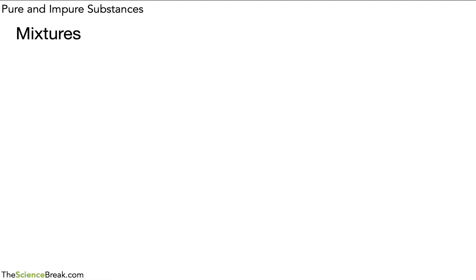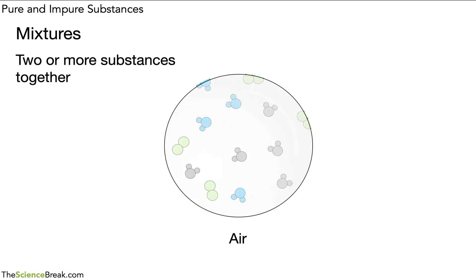What about mixtures or impure substances? Well, these are made of more than one substance, or two or more substances together, and again by substances we mean elements or compounds. One common example of a mixture is air. Now you might say air is a pure substance, however air is actually a mixture of many different gases. So if we could magnify into some air, we would see molecules of different gases: oxygen, water vapor, carbon dioxide, nitrogen, and one or two others. So that's one example of a mixture.